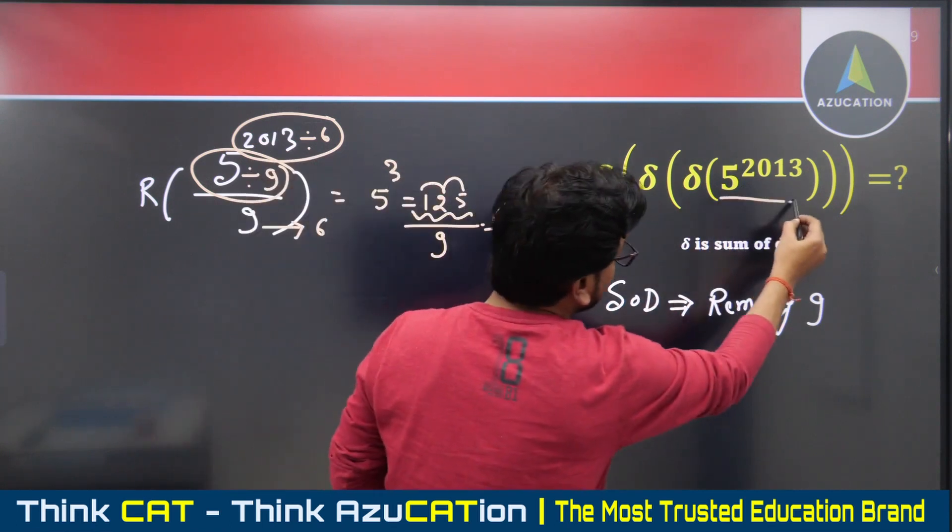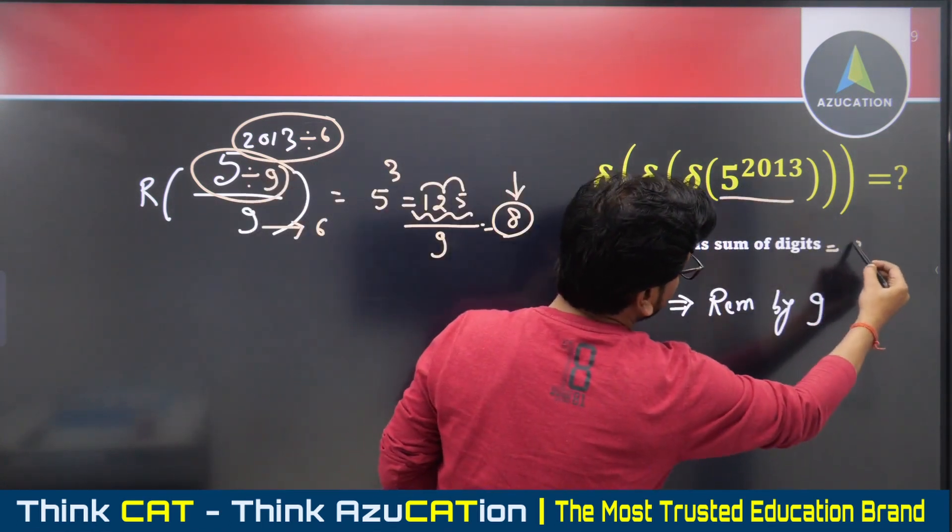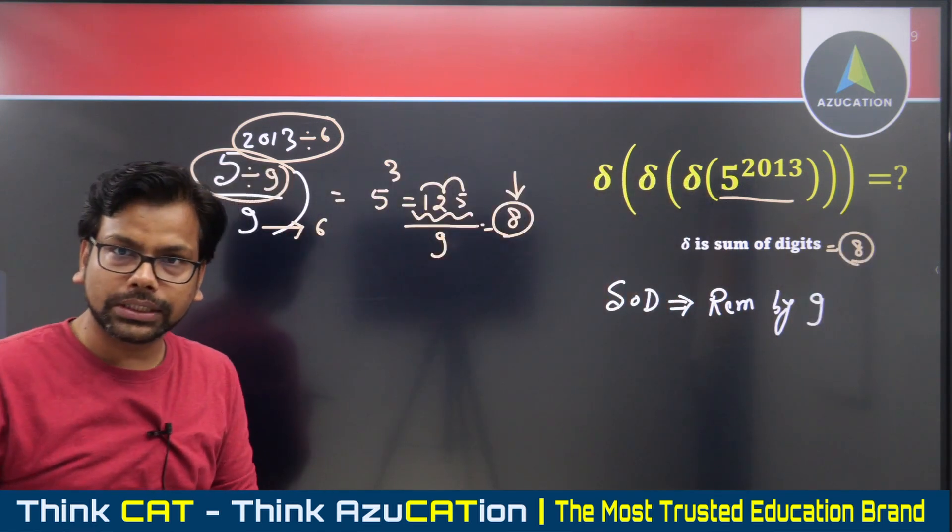When this number is divided by nine, the remainder is eight. So the sum of digits should be eight. Eight should be the answer of this question.